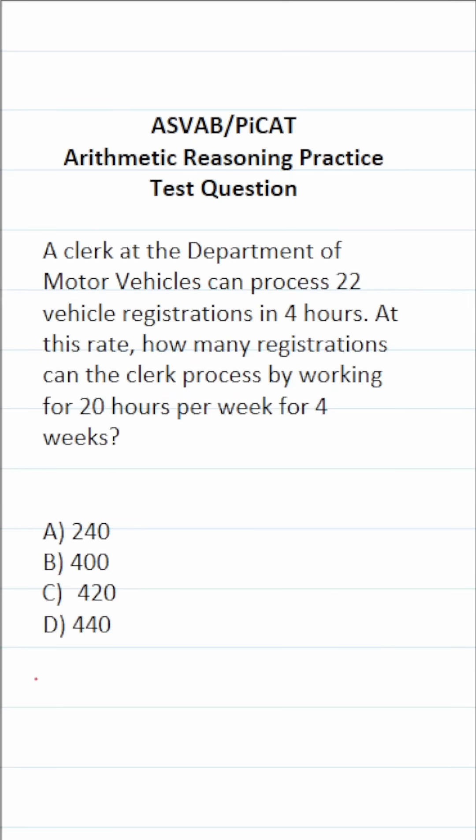This arithmetic reasoning practice test question for the ASVAB and PICAT says a clerk at the Department of Motor Vehicles can process 22 vehicle registrations in four hours. At this rate, how many registrations can the clerk process by working for 20 hours per week for four weeks?